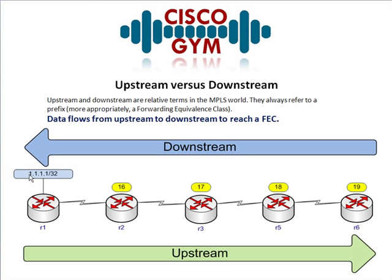Let's assume all these routers are running MPLS. R1 has a directly connected route — say 1.1.1.32. In normal MPLS operations, it will assign a local label and advertise that via LDP to R2. R2 learns label 16 from R1, assigns its own local label of 17, and advertises that to R3, and so on. The direction data flows when reaching this prefix is downstream — so if you're on R6 sending a packet to 1.1.1.32, that data flow is going downstream.